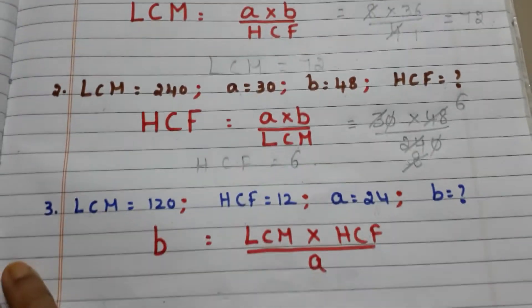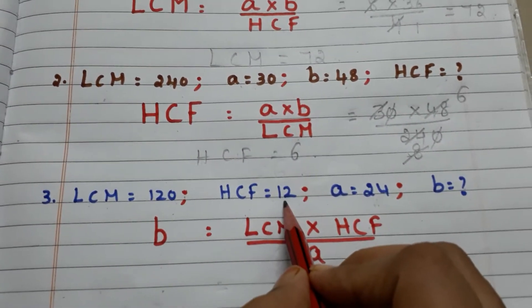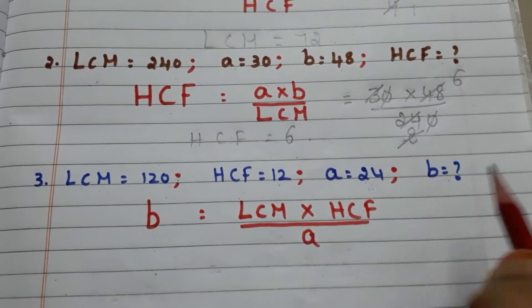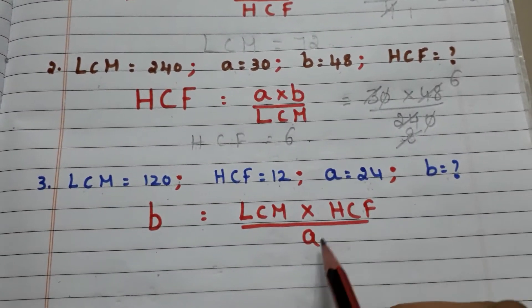Let us go to case 3. Here we have LCM equals 120, HCF equals 12, a equals 24, and we have to find b. Now the formula becomes b equals LCM into HCF by a.